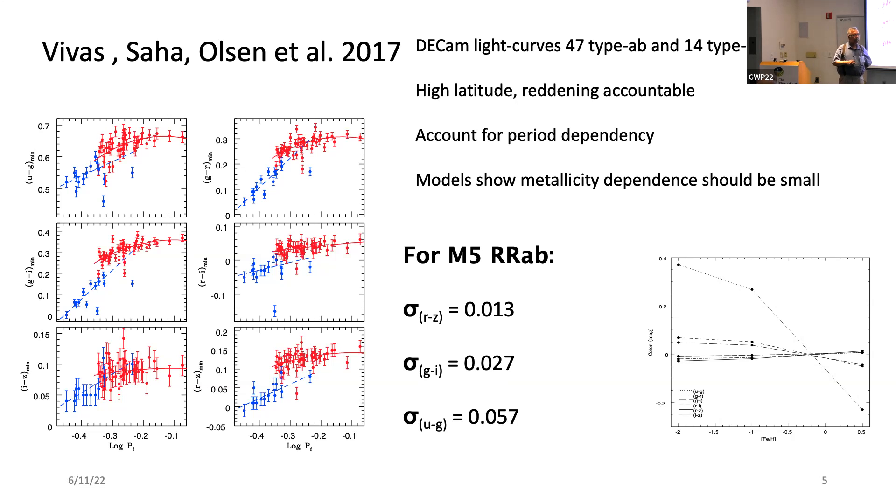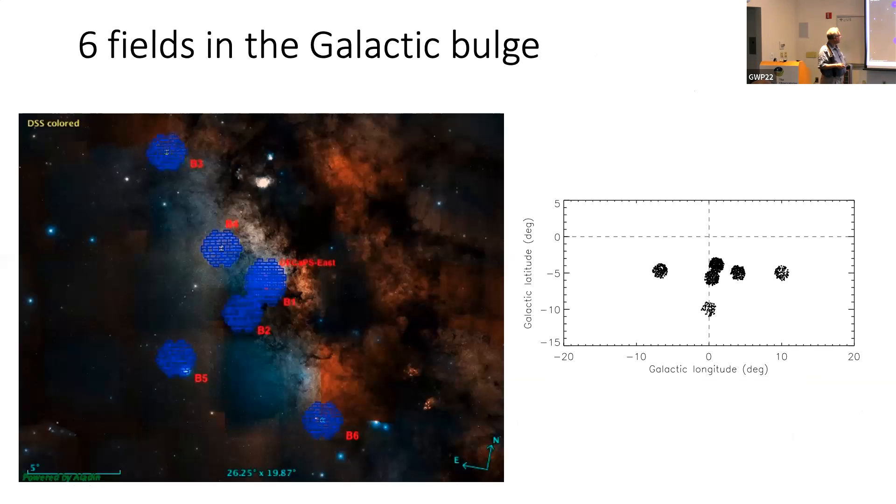If you do the modeling at the temperatures that correspond to minimum light and you use Kurucz models as a function of Fe over H running from minus 2 to plus 0.5, except for U minus G, the run of other passbands of other colors is actually quite mild. Mostly you're interested in somewhere from 0 to minus 2 and there's not much variation theoretically. But we will get empirical data and verify it later. But we couldn't resist the temptation of using this to look at the galactic bulge, having calibrated it for DECAM bands.